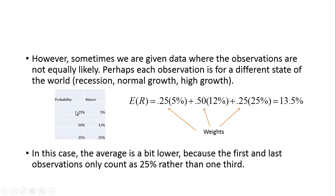For example, these probabilities might be assigned to different states of the world: recession, normal growth, or high growth. In this case we are weighting them by taking the probability times the return in that state of the world, plus the probability times the next state of the world, plus the last probability times the final return in that state of the world.